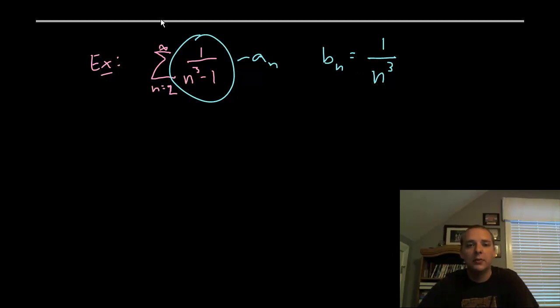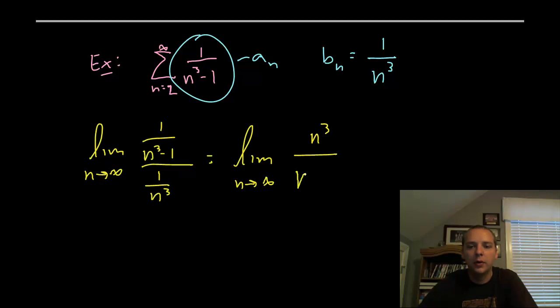So anyway, to finish this off I need to take the limit as n approaches infinity, and I need to take the ratio of A over B, and I hope that it is a finite positive number. So we have one over n cubed minus one divided by one over n cubed. We can take reciprocals just to clean up those fractions a little bit, and so n cubed over n cubed minus one.